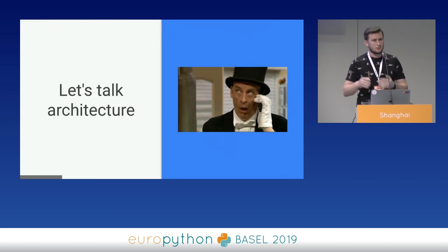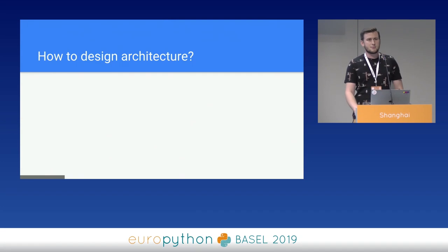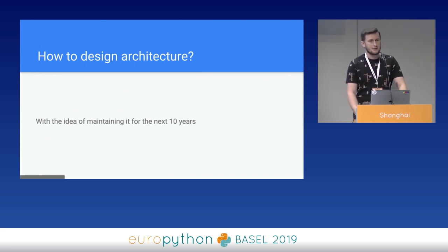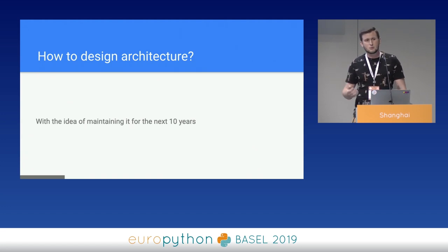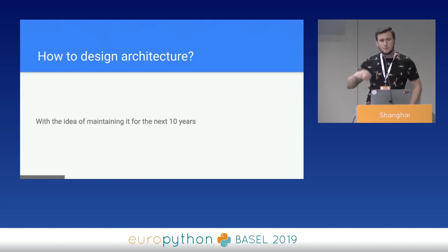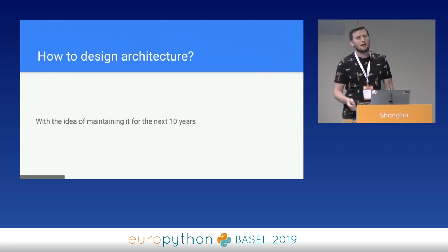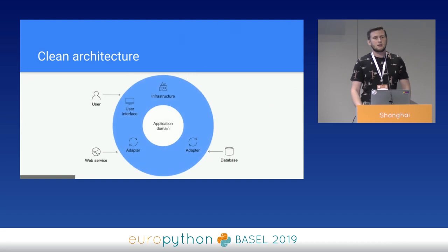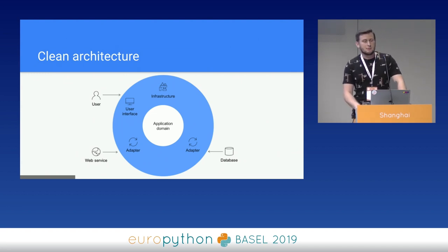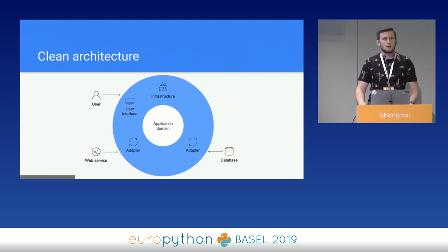Now let's talk architecture. Let's begin with the big question: how to design architecture with the idea of maintaining it for the next 10 years. This is really important because usually we change our jobs every few years, and we forget that those applications will still be developed by other people. So how to achieve that? With clean architecture. Clean architecture puts the application domain in the center of our application, not the database — it considers the database a part of the outside world. The application domain is where we implement our business logic and how we want to communicate with this outside world.